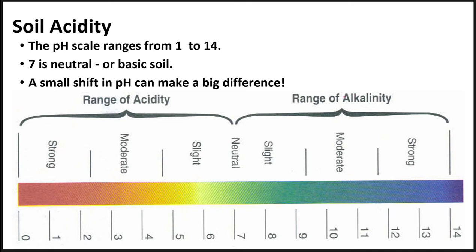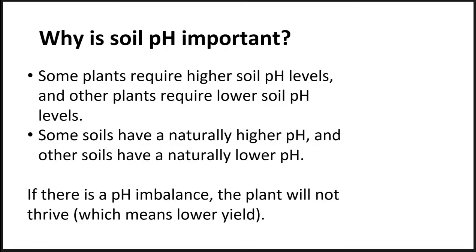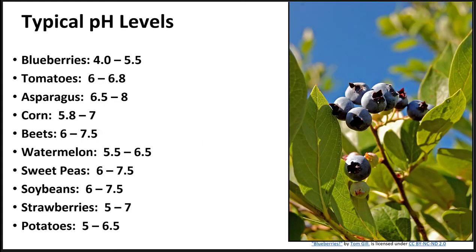The goal is to have a soil with a pH of around 7. A small shift in pH can make a big difference to plant health. Plants differ in their pH requirements, and if the soil is too imbalanced for a particular plant, the plant will not thrive. Here are some typical pH ranges for garden crops. Notice how low a pH is required by blueberries. Very few of these species require a pH higher than neutral or 7. The rule of thumb is to aim for 7, except for blueberries, which have a significantly lower pH need.